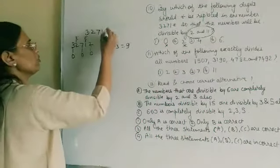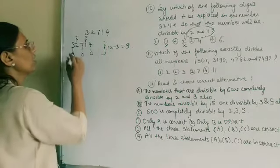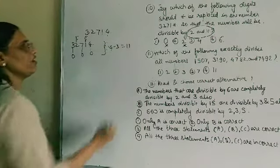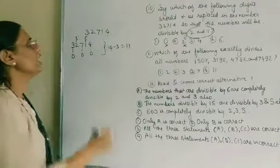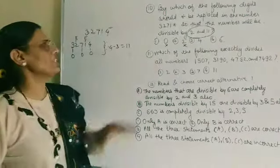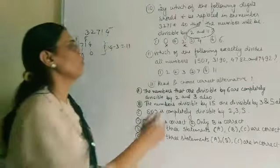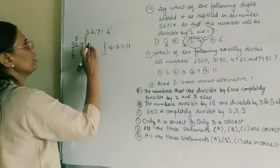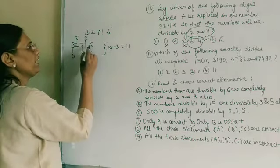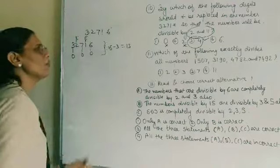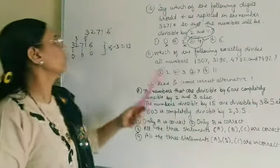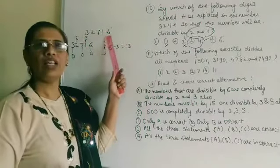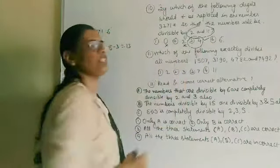Trying star = 4: odd-place sum gives 3 plus 7 plus 4 = 14; 14 minus 3 = 11. And 11 is divisible by 11. Therefore if we take star = 4, this number is divisible by both 2 and 11, so this option is correct. Trying star = 6: odd-place sum gives 10 plus 6 = 16; 16 minus 3 = 13 — not divisible by 11. Therefore star = 4 gives the only valid answer and the third option is correct.